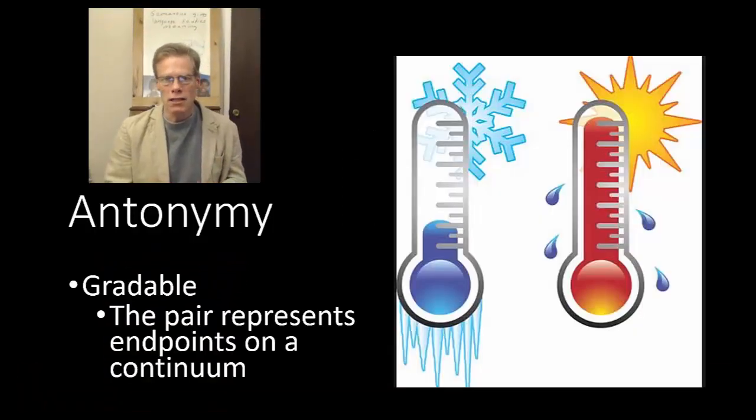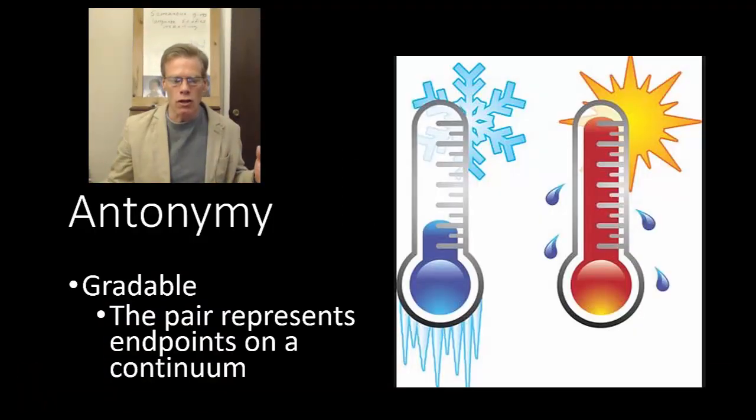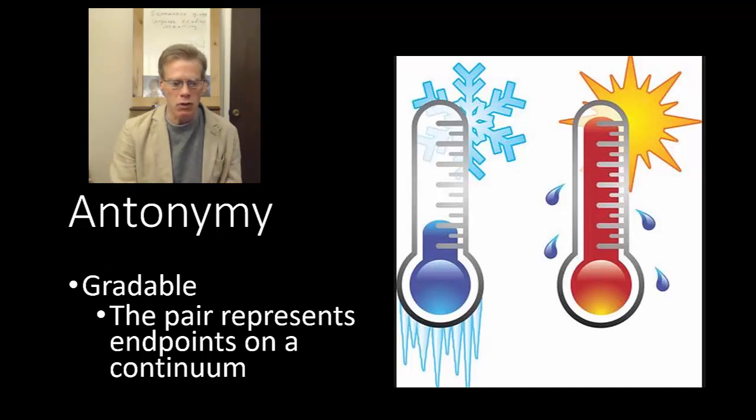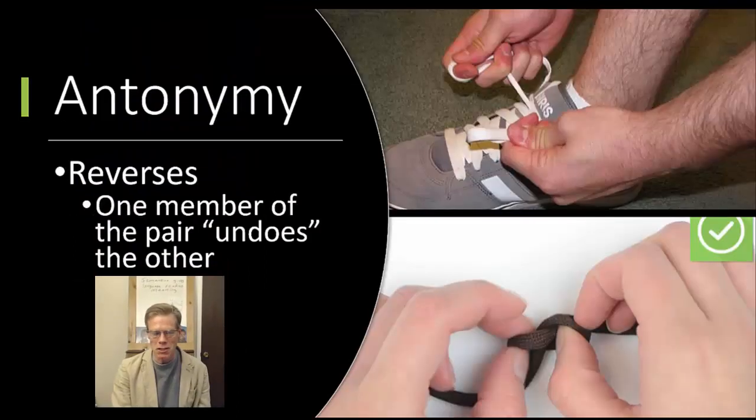Gradable antonyms is more where you've got a scale, where the pair represent endpoints on a continuum. So, hot and cold are very good examples of gradable antonyms.